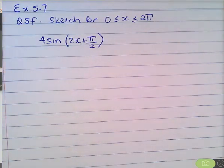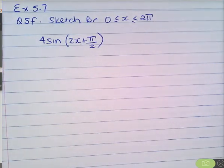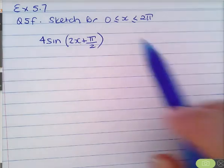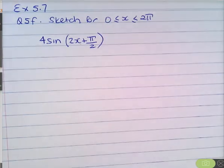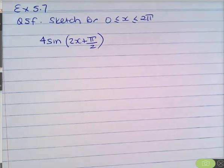Okay, this is exercise 5.7, question 5f from your textbook: sketch from 0 to 2π the following curve, 4 sine bracket 2x plus π on 2.